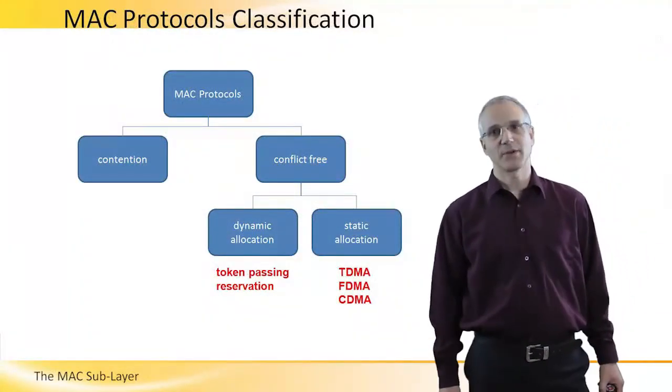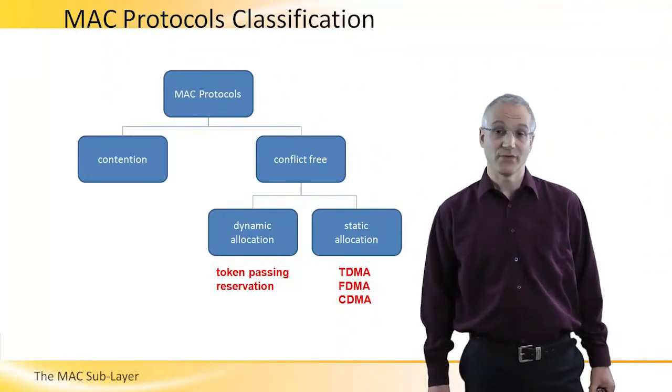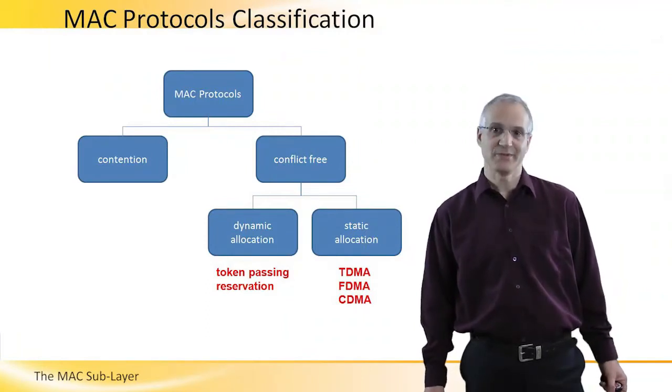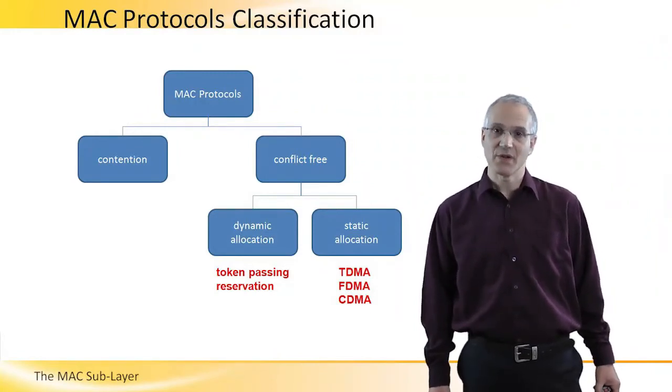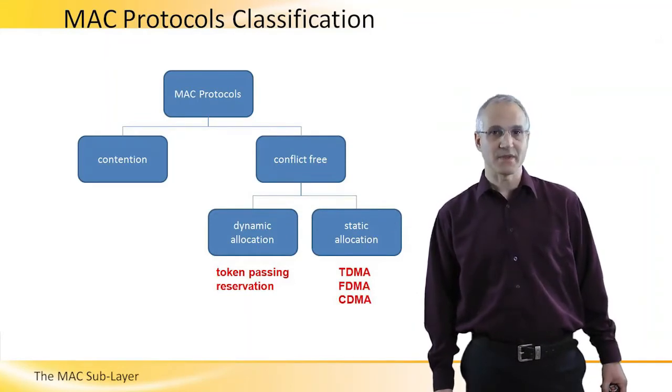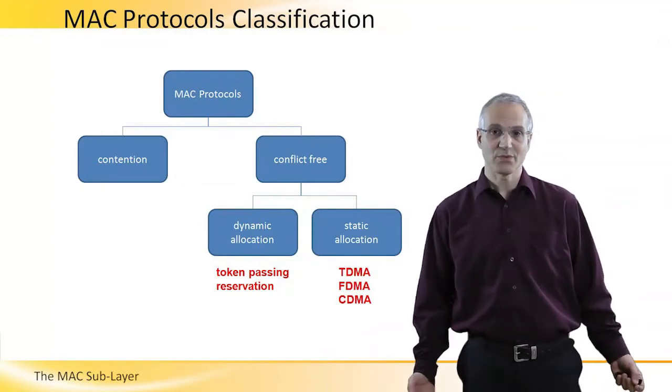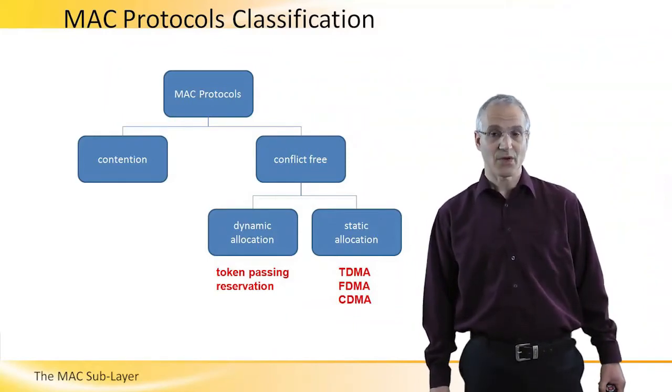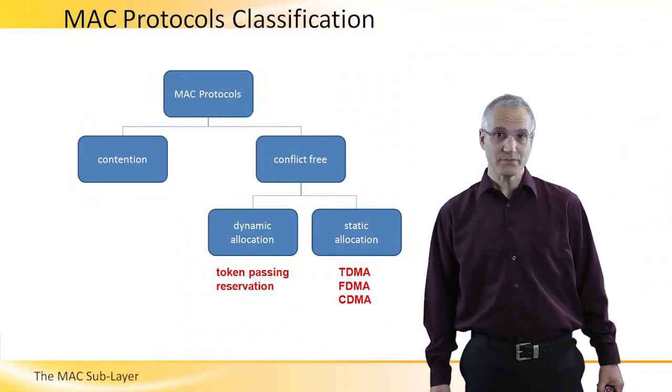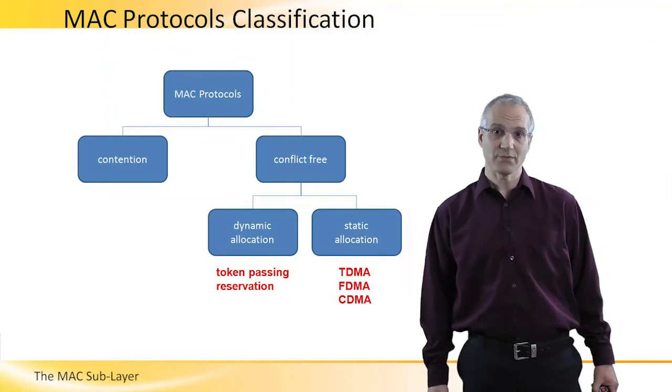A media access control or MAC protocol can be divided into several classes. First are those where conflicts cannot occur. Of course, we can have static allocation, like we described before, with TDMA, FDMA, and CDMA. Or we can have some kind of dynamic allocation, where there's a token that passes between the different users, and only a user that holds the token can transmit, thus no collision can occur. Another way to do dynamic allocation is through a reservation mechanism. All these are used in protocols. However, in this talk, we're going to concentrate on contention protocols. These are protocols where collision between transmission can occur, but we have to solve them.